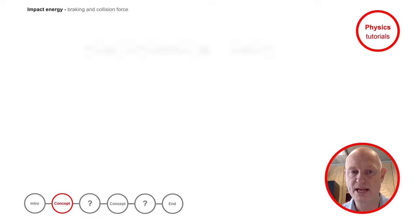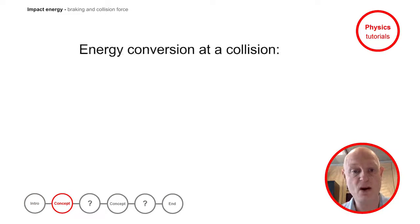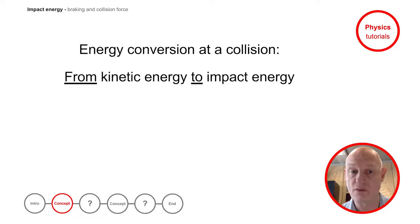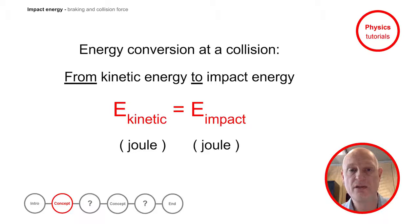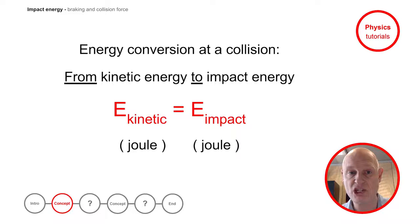When a moving object is braking or colliding, energy is converted from kinetic energy to impact energy. In other words, the kinetic energy the object had before braking is equal to the impact energy which is released during braking.